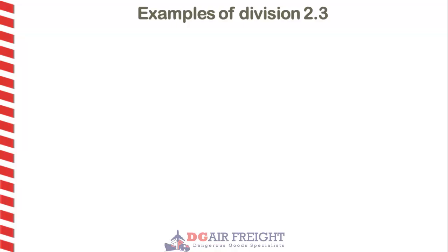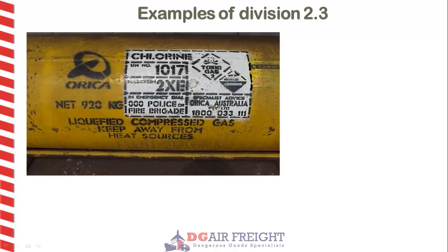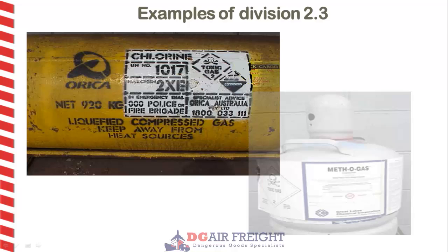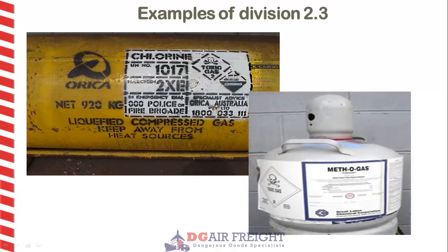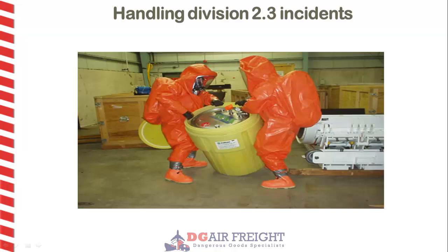Examples of division 2.3 toxic gases are chlorine and methyl bromide. Here, emergency responders are wearing gas suits when removing a leaking toxic gas cylinder.